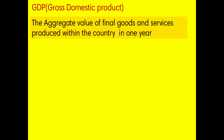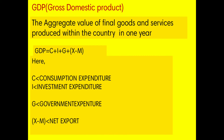The first identity is Gross Domestic Product, that is GDP. The aggregate value of all final goods and services produced within a country in one year is Gross Domestic Product. The formula to calculate GDP is C plus I plus G plus X minus M, where C is consumer expenditure, I is investment expenditure, G is government expenditure, and X minus M is net export.